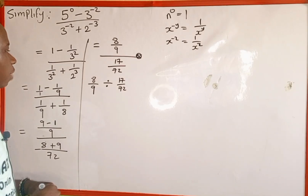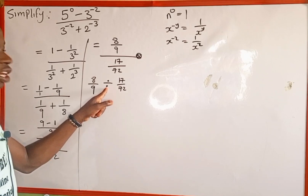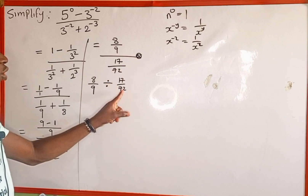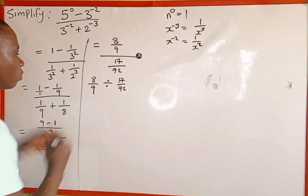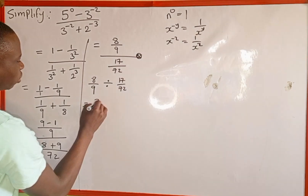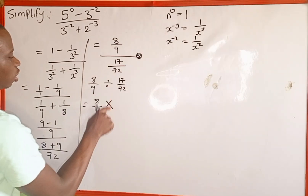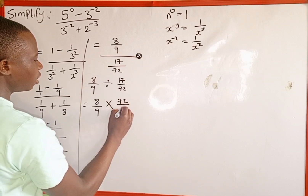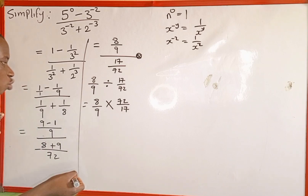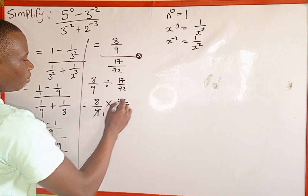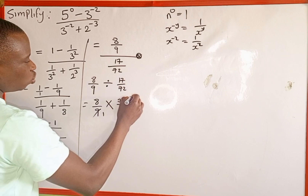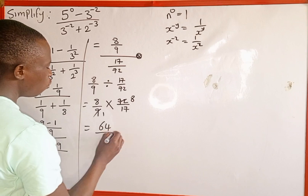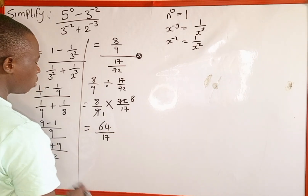According to a property of mathematics, we can change the division operation to multiplication and reciprocate the fraction on the right — we take 72 up and bring 17 down. So this is the same as 8 over 9 multiplied by 72 over 17. Now we multiply: 9 can go into 9 one time, and 9 can go into 72 eight times. Then 8 multiplied by 8 gives us 64, over 1 multiplied by 17 gives us 17.